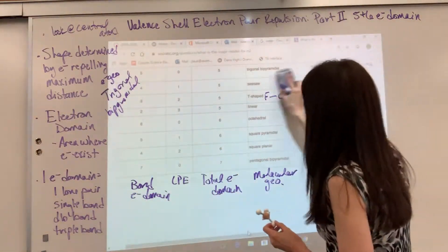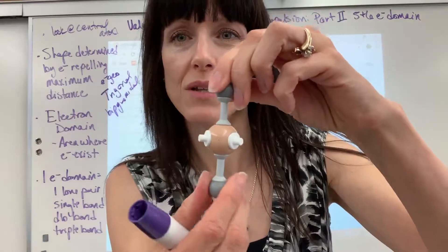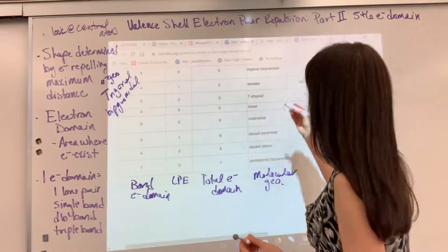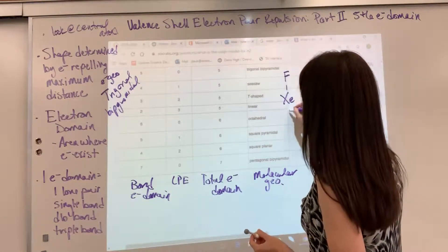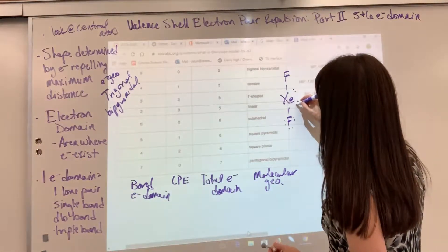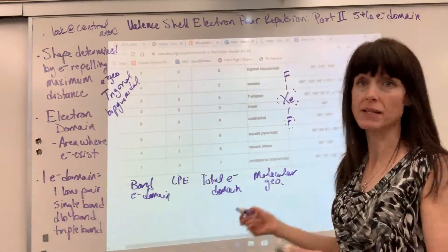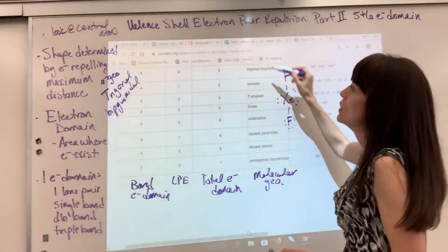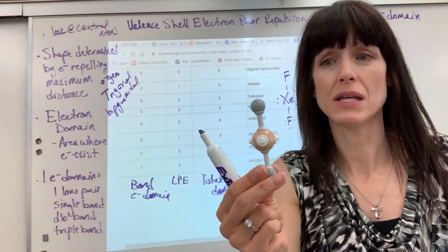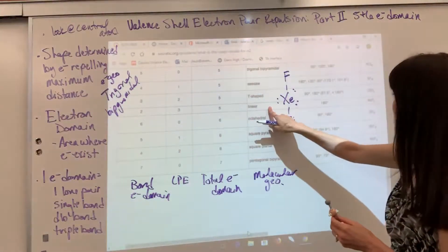The last shape in the five electron domain category is when you have three lone pairs. The example is xenon difluoride, XeF₂. Xenon has two fluorine atoms plus three lone pairs around it. Counting electron domains: one, two, three, four, five. The electron geometry is trigonal bipyramidal, but the molecular geometry — what you actually see, since you can't see the three lone pairs — is linear, with the name linear.